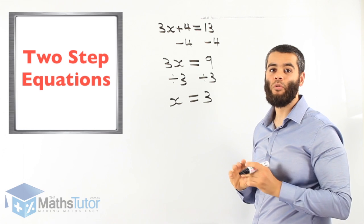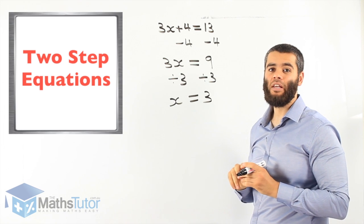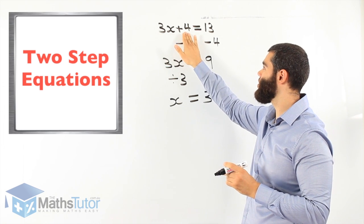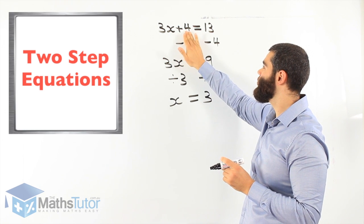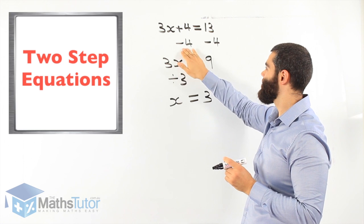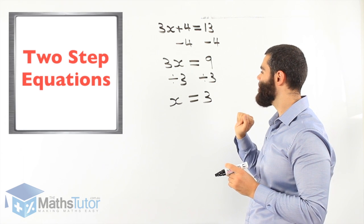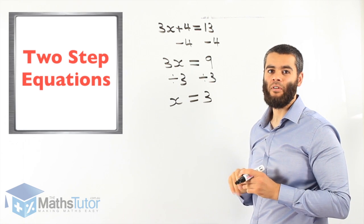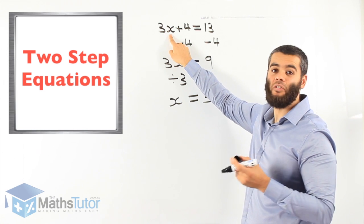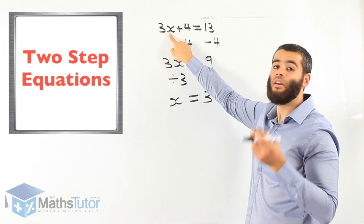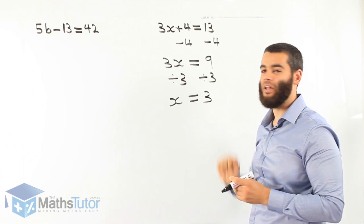Very easy. The most important part is knowing which one to get rid of first — the 3 or the positive 4? Always start with the furthest one away from x. The furthest one is 4, so we start there: minus 4, minus 4. 3x equals 9. Then divide by 3, divide by 3. x equals 3. Does it work? Let's see: 3 times x, so 3 times 3 is 9. 9 plus 4 is 13. Yes, it works!